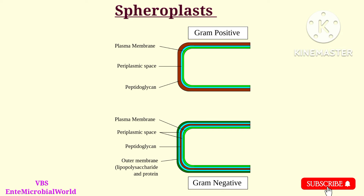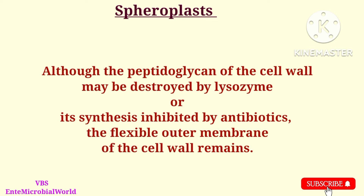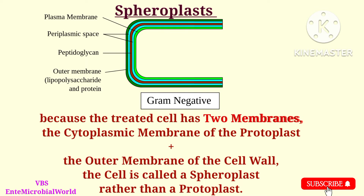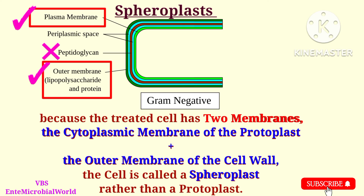We have already seen that the cell walls of gram negative bacteria differ from those of gram positive bacteria by possessing an outer membrane. Although the peptidoglycan of the cell wall may be destroyed by lysozyme or its synthesis inhibited by antibiotics, the flexible outer membrane of the cell wall remains. Because the treated cell has two membranes — the cytoplasmic membrane of the protoplast plus the outer membrane of the cell wall.